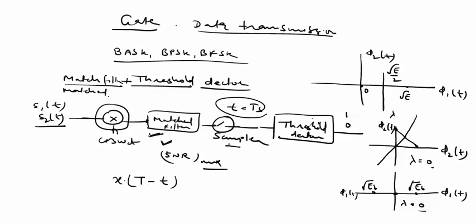The exact expression for the match filter is x(T minus t), where capital T denotes the bit duration TB. This expression comes from the condition: when a linear filter is designed to maximize the output signal-to-noise ratio for a given input signal, it is called a match filter. The role of the match filter is to maximize SNR at the particular point T equals capital T.